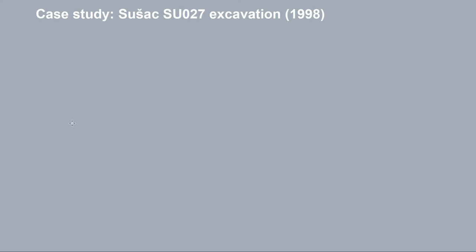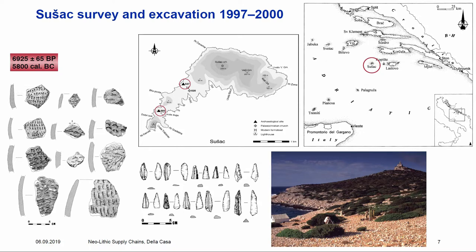Here's the case study: Suchatz survey and excavation in the late 1990s. Suchatz is a small island west of the larger South Dalmatian islands — mostly uninhabited, but bearing a couple of thrilling archaeological situations. Site SUO02 in the south of the island is an early Neolithic site with typical Impresso ceramics and a very peculiar flint assemblage, dated by radiocarbon to the beginning of the 6th millennium Cal BC — the oldest evidence of human presence identified on the island.